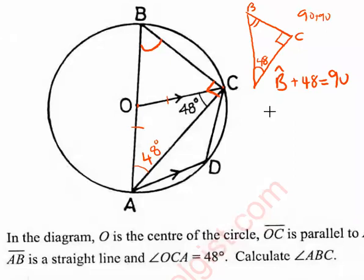So I'm going to say angle ABC equals 90 minus 48. What am I going to get? This is going to give me 42 degrees.